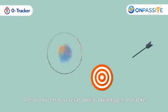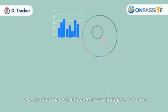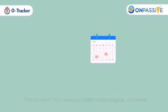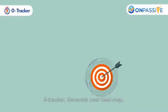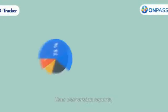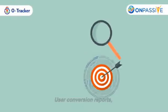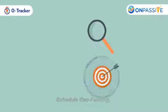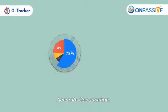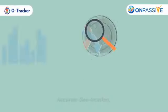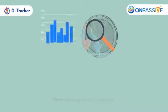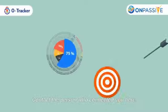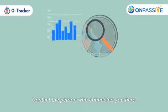The product has several added advantages. O-Tracker offers predictive analysis, generate user heat map, user conversion reports, schedule geofencing, accurate geolocation, user demographic reports, and the ability to contact the person who connected you here.